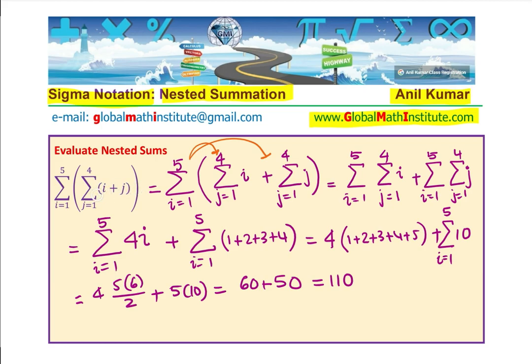The idea here is to write them as two different series as shown here, and then work from inside out. So when i is operated by sigma where j changes, in that case it is 4i which you get. But when j is operated, when j changes 4 times, then we are summing 1 to 4 numbers, which is 4 times 5 divided by 2, which is 10. So we can simplify and get our answer. I hope these steps are absolutely clear.